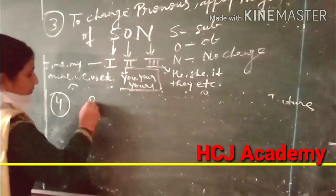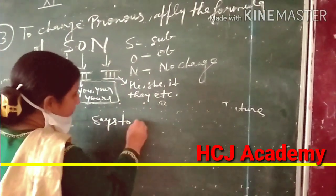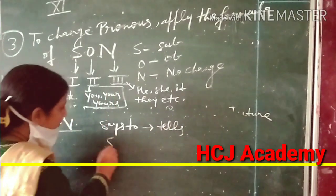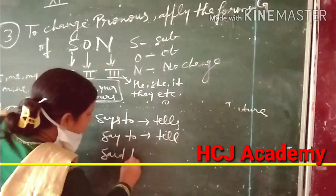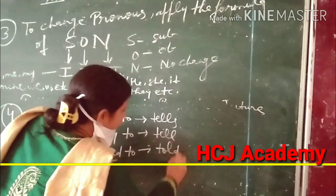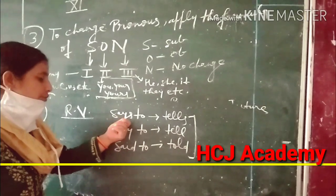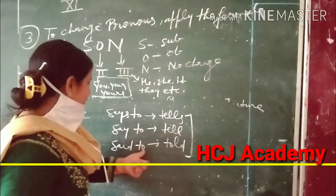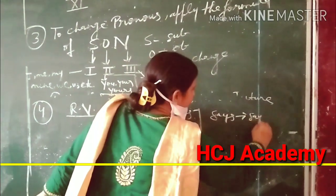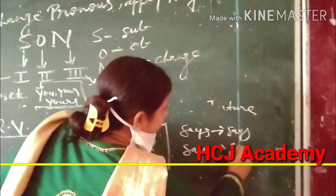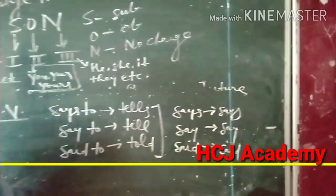Rule 4 concerns the reported verb. If 'says to' is given, it changes to 'tells'. If 'say to' is given, it changes to 'tell'. If 'said to' is given, it changes to 'told'. But if only 'says' is given without 'to', then 'says' remains 'says', 'say' remains 'say', and 'said' remains 'said'. That is the fourth rule.